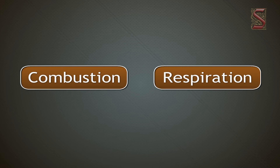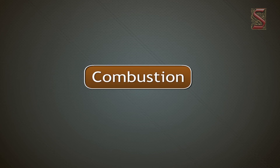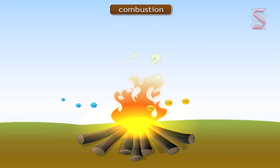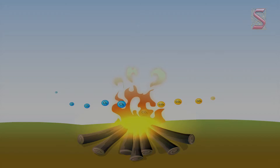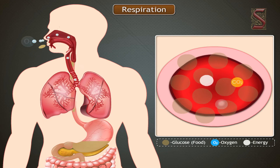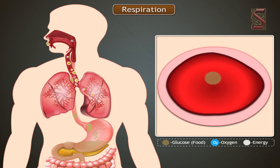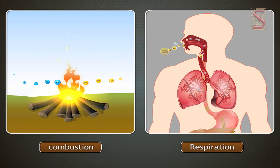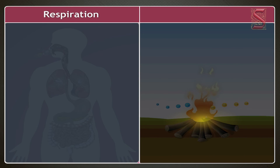Before we move forward, let us understand the difference between combustion and respiration. During combustion or burning, oxygen combines with a compound and releases energy in one step. In cells, during respiration, energy is released in a series of steps and the oxidation is slower.